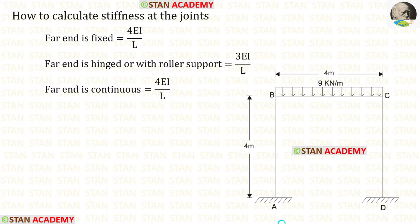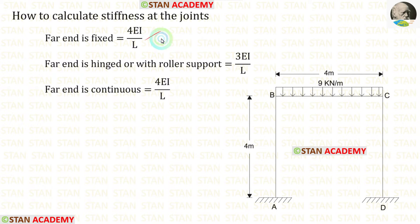In the moment distribution method, we have to find the distribution factor. To find the distribution factor, we have to calculate the stiffness. If the far end is fixed, the formula is 4EI/L. If the far end is hinged or with roller support, the formula is 3EI/L. If the far end is continuous, the formula is 4EI/L.